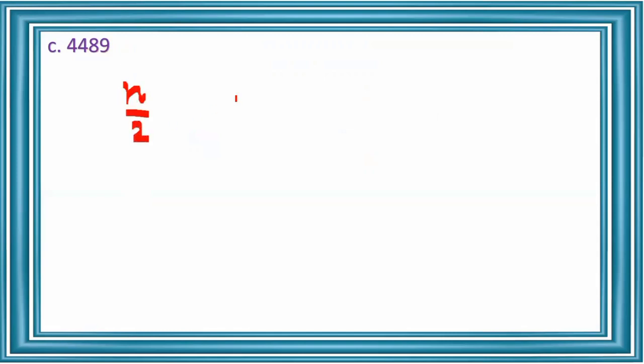Next number is 4,489. How many digits are there? 1, 2, 3, 4 — so 4 digits. 4 is an even number, so we use the n/2 equation. n is 4, so 4/2 = 2. The number of digits in the square root of 4,489 is 2. You can check this by finding the square root of 4,489 using the division method.